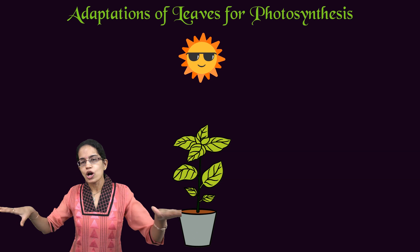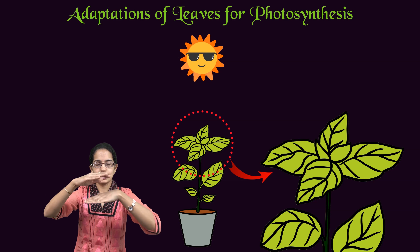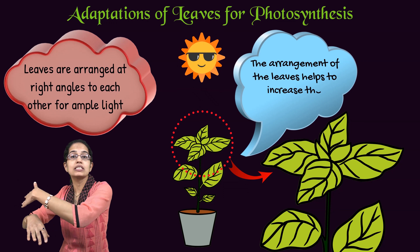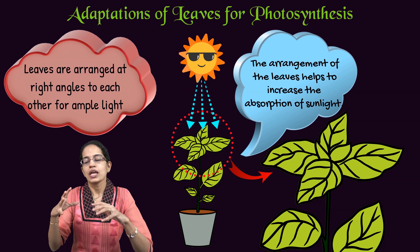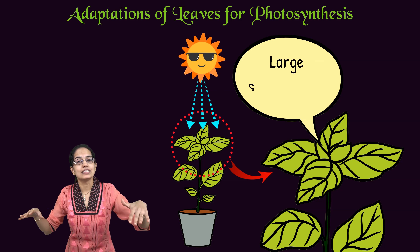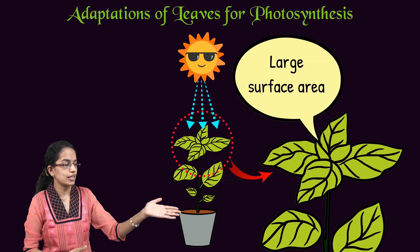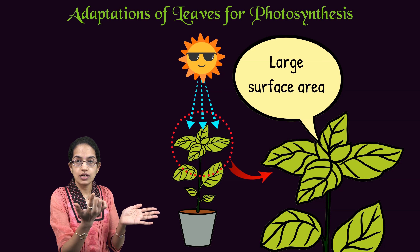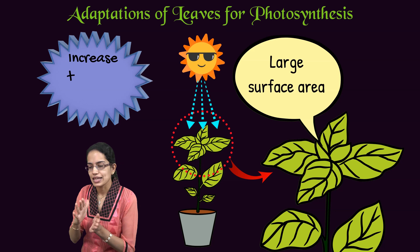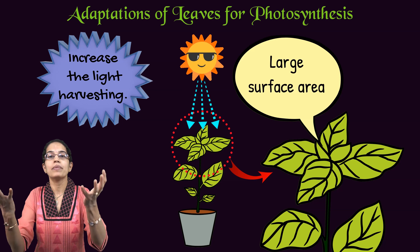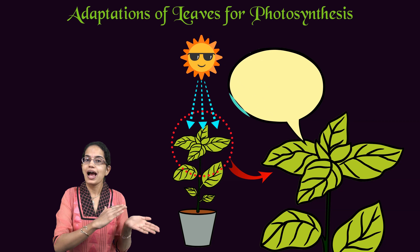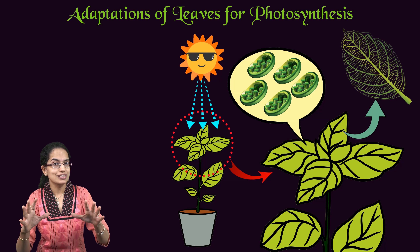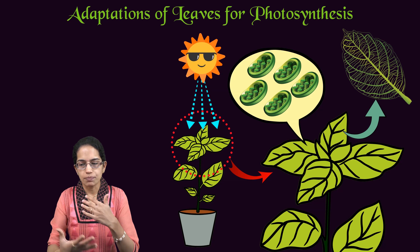Why do leaves have certain adaptations for photosynthesis? Most plant leaves do not overlap one over the other — they are arranged at right angles or at some angle so each leaf receives significant sunlight. Leaves also usually have a larger surface area to enhance maximum absorption of light. There are also a huge number of chloroplasts present and a good network of veins, which are specific benefits for the process of nutrition in plants.